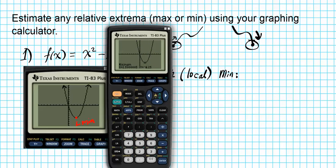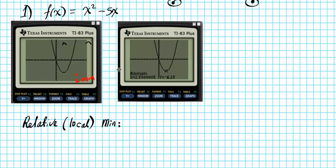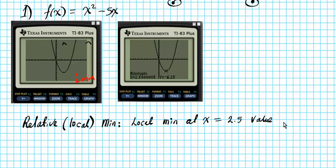So let's write that down. We have a local or relative minimum at x = 2.5 with a value of y = -6.25. That's the location of the local minimum and its value.